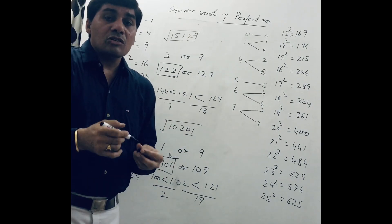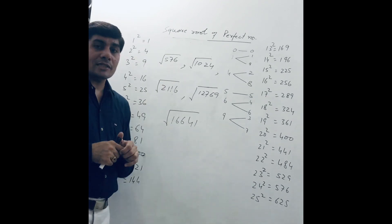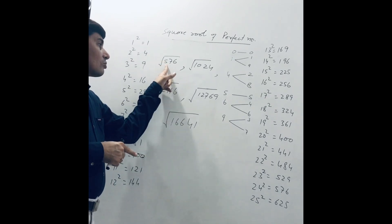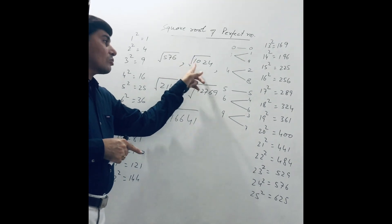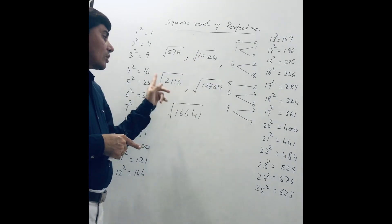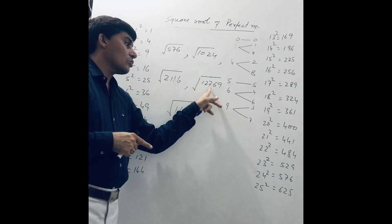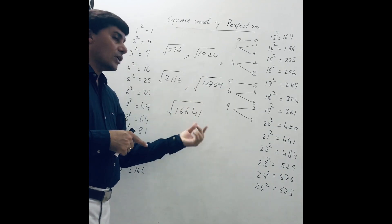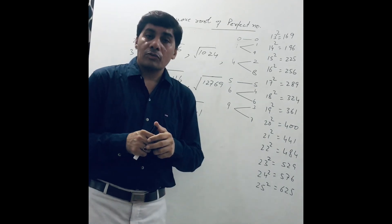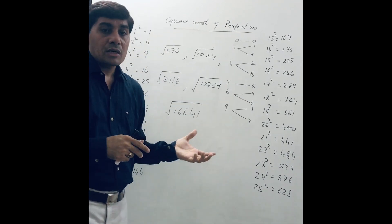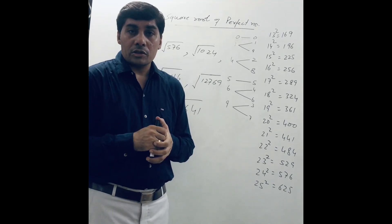I think you are enjoying this class. There are some questions for your practice: find the square root of 576, square root of 1024, square root of 2116, square root of 12769, and square root of 16641. Solve these questions and share your answers in the comment box.